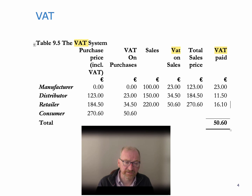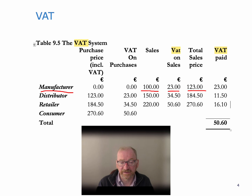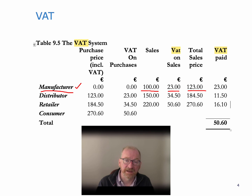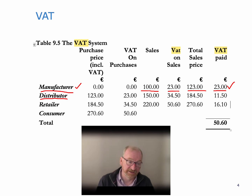This is the VAT system. Suppose you've got a manufacturer and they have sales of €100 — the goods start with the manufacturer, and there are no inputs that are relevant for VAT. The VAT is going to be 23%, so the total sales price is €123. That manufacturer has no input credits — which is what we call VAT on purchases — so they have to pay over the €23 of VAT that they collect from the distributor to the revenue commissioners. The revenue commissioners get €23 of VAT from the manufacturer.